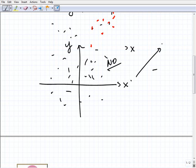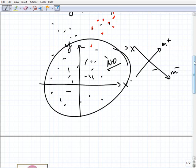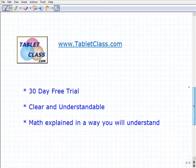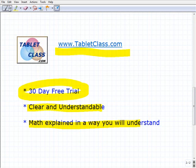So you have positive correlation, you have negative correlation, and then you have no correlation. All right, so if you need more help with scatter plots and the like, tabletclass.com. And by the way, we like comments and feedback on our videos. Hopefully we're helping you. Clear and understandable math. We explain it in a way that you'll actually get it. We have a 30-day free trial.